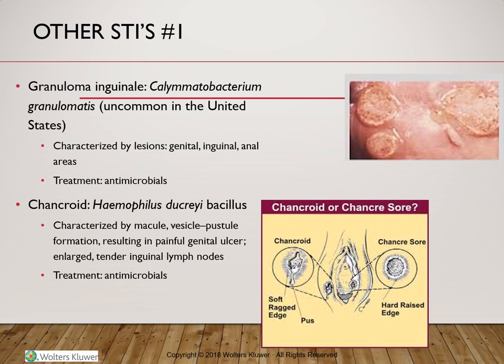Another sexually transmitted condition is chancroid, caused by Haemophilus ducreyi. It is a very rare infection last reported in the United States in 2010 and is characterized by a macule that becomes a vesicle and finally develops into a very painful genital ulcer with enlarged, tender lymph nodes in the inguinal area. This is in contrast to the chancre of syphilis, which is totally painless. The condition can be treated and cured with azithromycin, ceftriaxone, ciprofloxacin, or erythromycin.